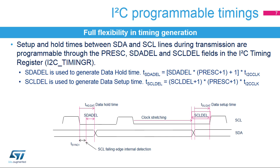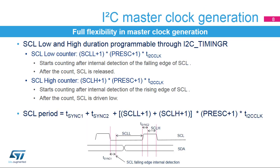After the data is sent, the clock line is stretched low during the programmed data setup time. The total data hold time is greater than the programmed SDA-DEL counter. This is because the SDA-DEL delay is only added once the SCL falling edge is internally detected. The time TSYNC1 needed for this internal detection depends on the SCL falling edge, the input delay due to the filters, and the delay due to the internal SCL synchronization with the I2C clock. However, the setup time is not impacted by these internal delays.